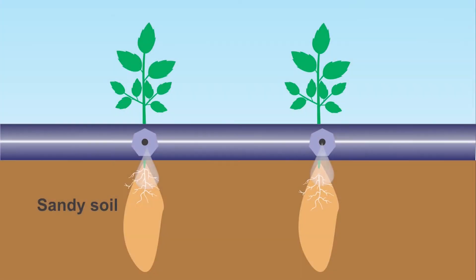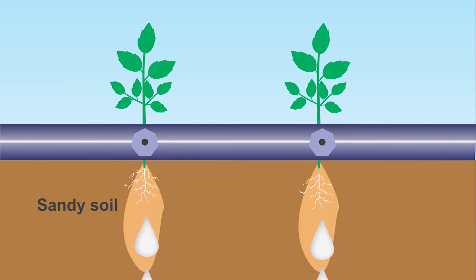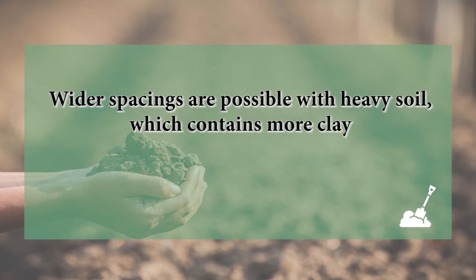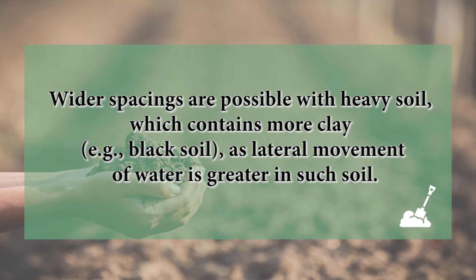A major consideration in the design of a surface drip irrigation system is drip tubing lateral spacing. Soil having more sand content requires closer spacing of drip tubing laterals, which increases the cost of the drip irrigation system. Wider spacing is possible with heavy soil which contains more clay, for example black soil, as the lateral movement of water is greater in such soil.